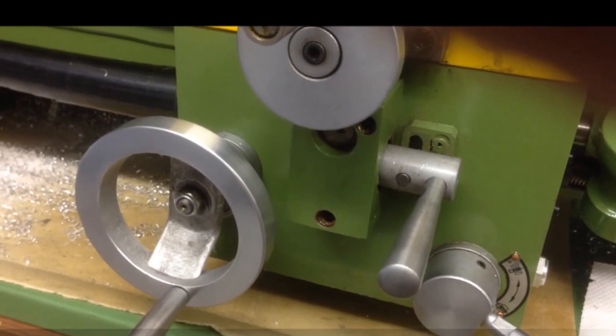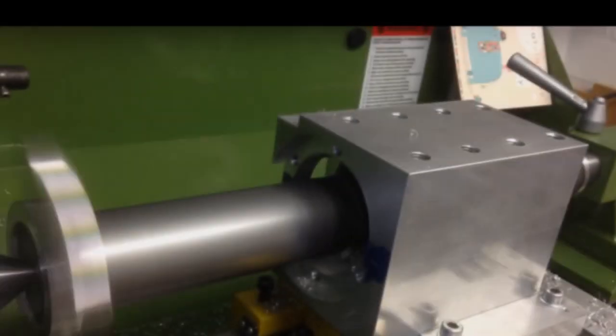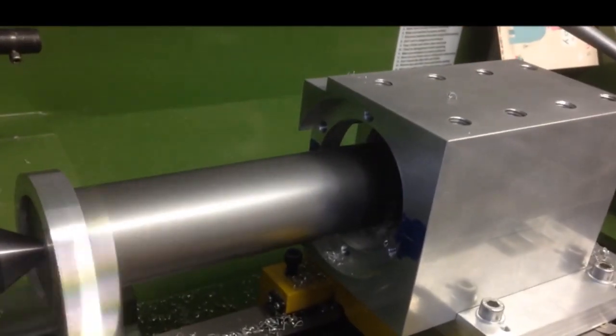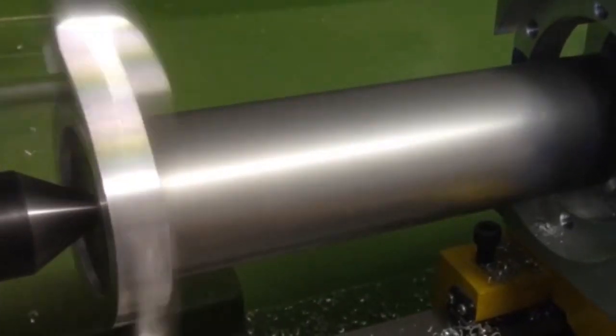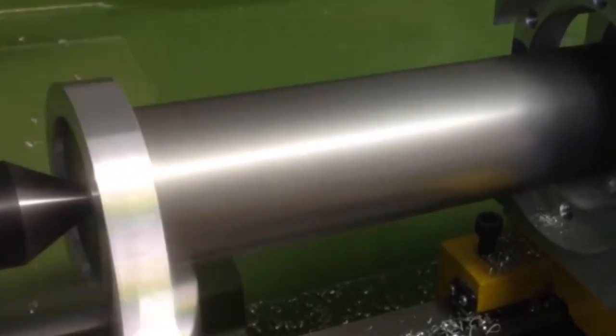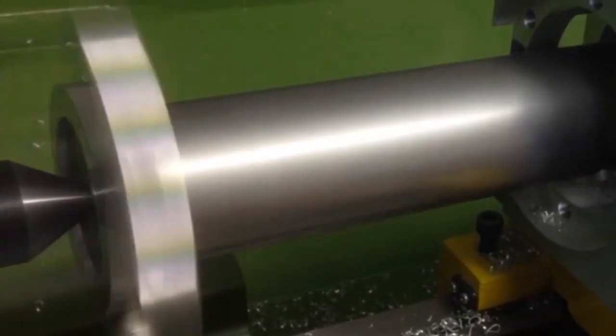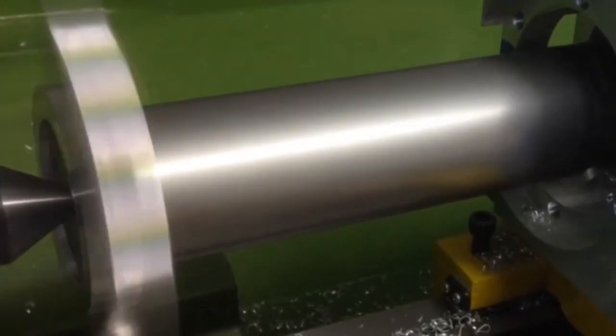So this is the operation called line boring. Effectively you have this very large solid bar, that's the bit you can see rotating, it's driven by what's called a dog at that end there. That's putting the drive in from the lathe and then it's held between those two centers, that's that cone shape there.